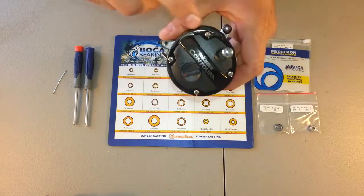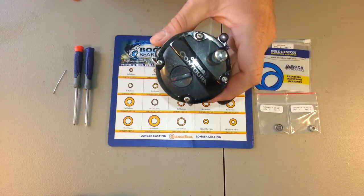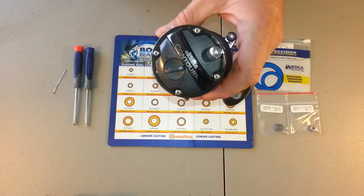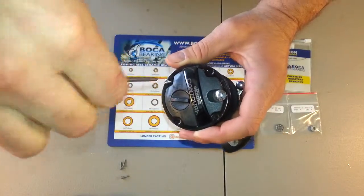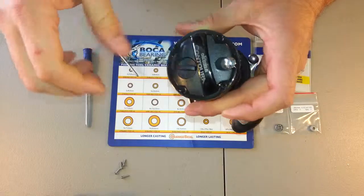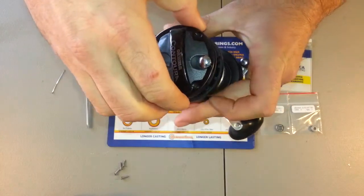First up, we've got to remove the four Phillips screws off the side plate. I've removed all the screws, now I'll pull the side plate off.